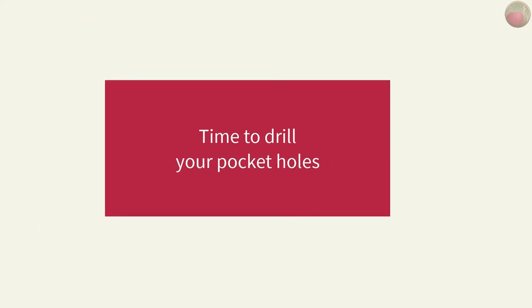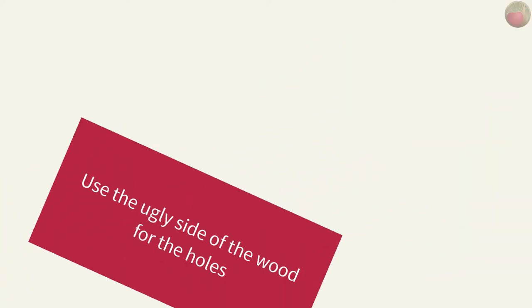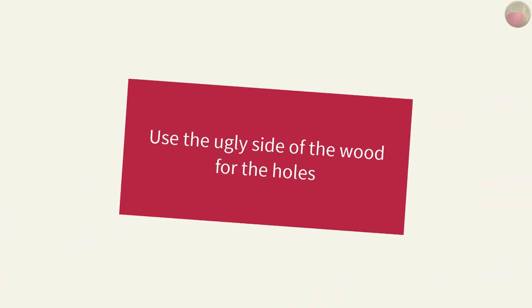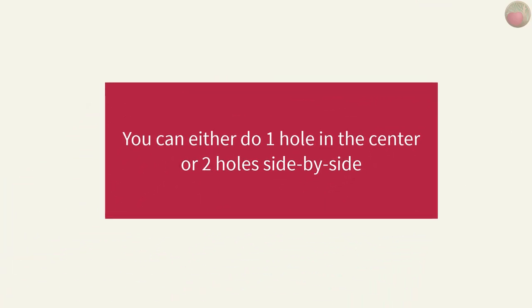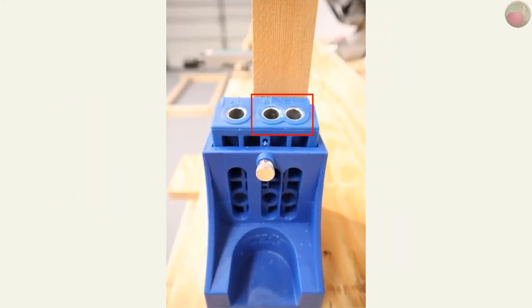Now that you know everything is correctly measured and cut, you're ready to make your pocket holes. If the 2x2s have an ugly side, use that and make one pocket hole in the center of the width on each end. Now note, you can use two pocket holes by using the B and C holes on a K4 jig to help ensure the rails don't spin.